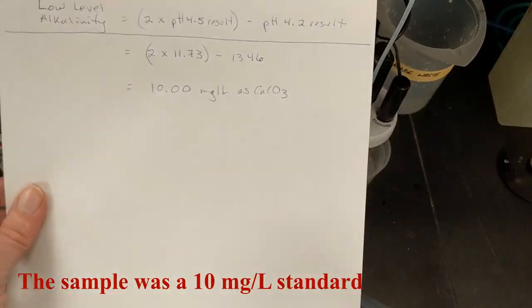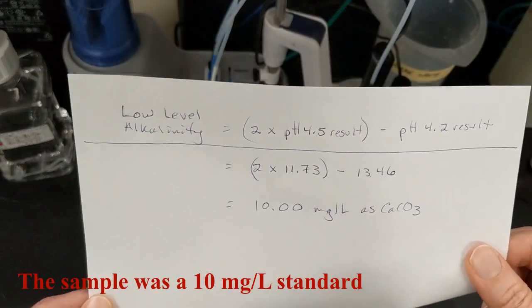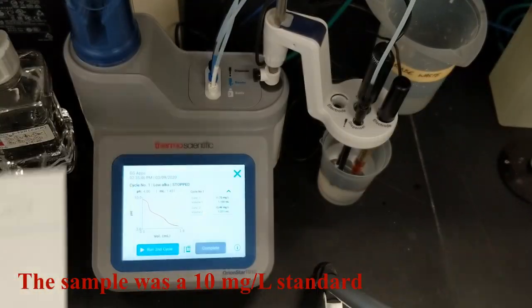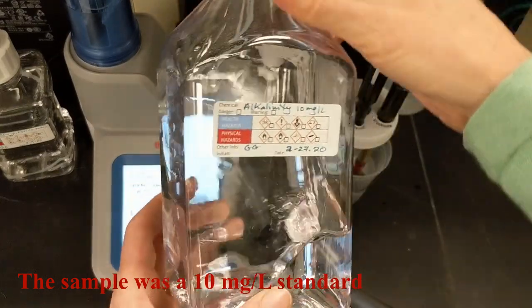This calculates as 10 mg per liter as calcium carbonate. Since the sample was 10 mg per liter alkalinity standard, my results are good.